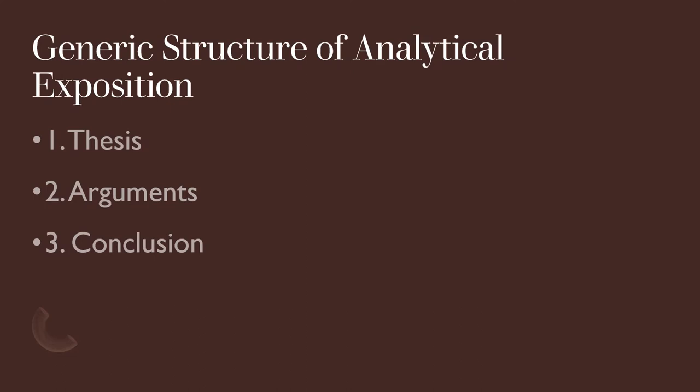What is the generic structure of analytical exposition? An analytical exposition text consists of three parts. The first is thesis, the second is argument, and the third is conclusion.